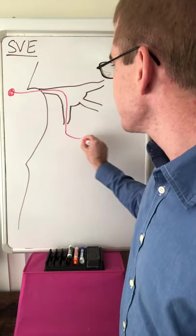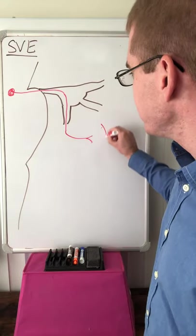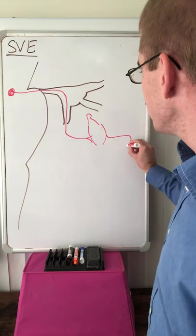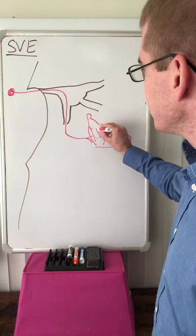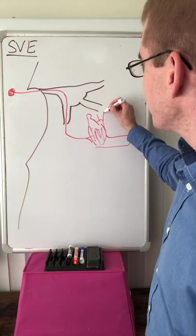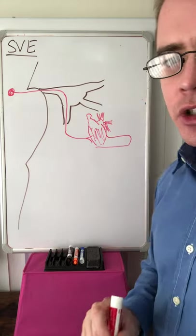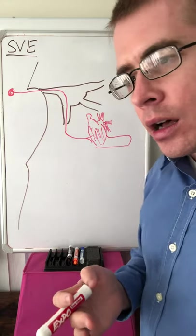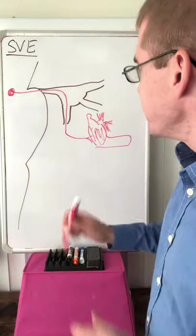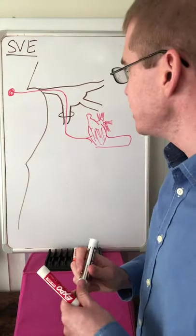They travel out through the foramen rotundum, and then they synapse on the muscles of mastication. So here's masseter along the jaw. Here's the jaw. We've also got temporalis attaching to the coronoid process. We've got the medial and lateral pterygoids inside the jaw. We've got the other muscles innervated. Let's put in the foramen, foramen rotundum.